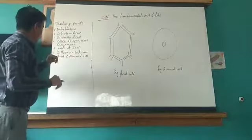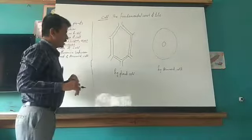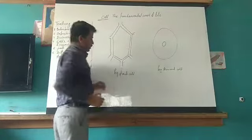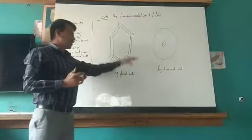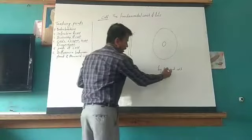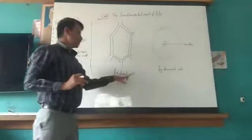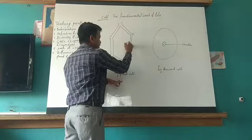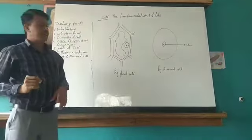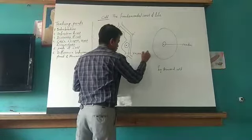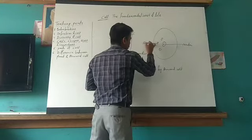Now we will discuss the parts of the cell, as well as the difference between the plant cell and the animal cell. Here are the simple diagrams that I have drawn. First, the shape of the cell — in animal cell it is somewhat circular, and in plant cell it is somewhat rectangular. In animal cell, the nucleus is at the centre. But in plant cell, the nucleus is not at the centre — it is displaced to either side of the cell because of the big size of the vacuole. These vacuoles in plant cells are large in size, but in animal cells, vacuoles are small in size.